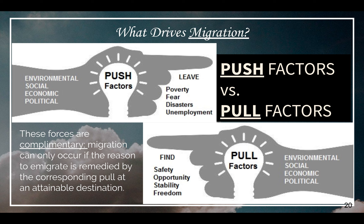These are pretty self-explanatory terms, and I don't want to be too elementary or waste your time. So just to be very brief: a push factor with regard to migration is something that is typically negative that is pushing someone out of their current living situation — it could be something like war or climate change. A pull factor is something that would be drawing someone to a new location, such as an economic opportunity, a new job, or a country that is much more politically stable.